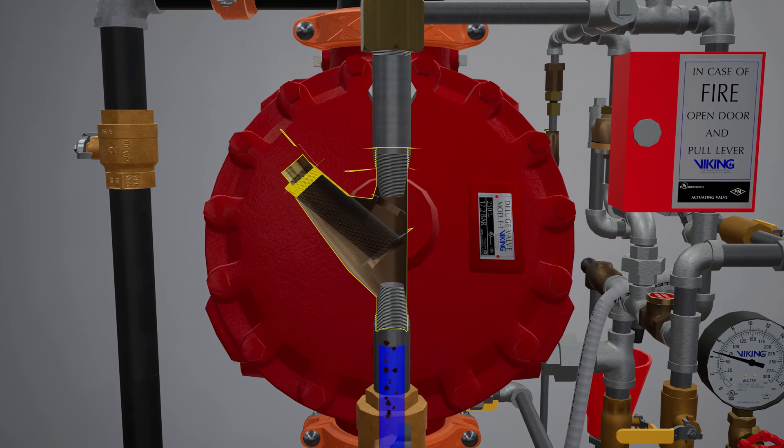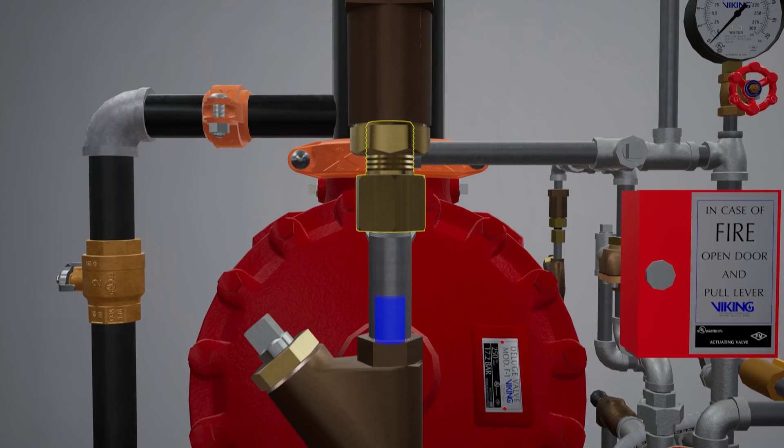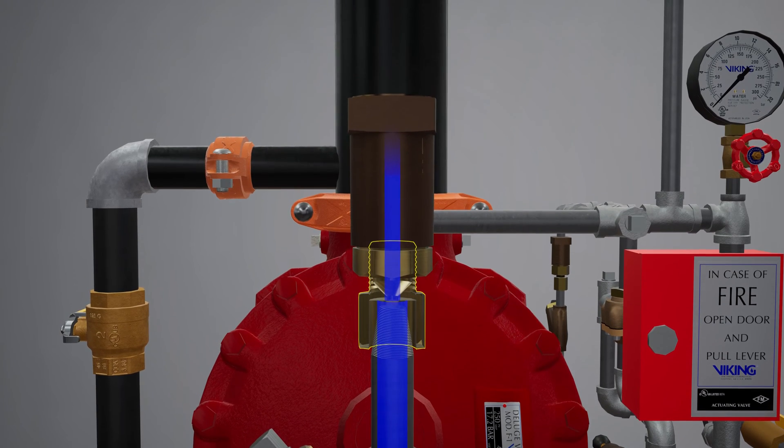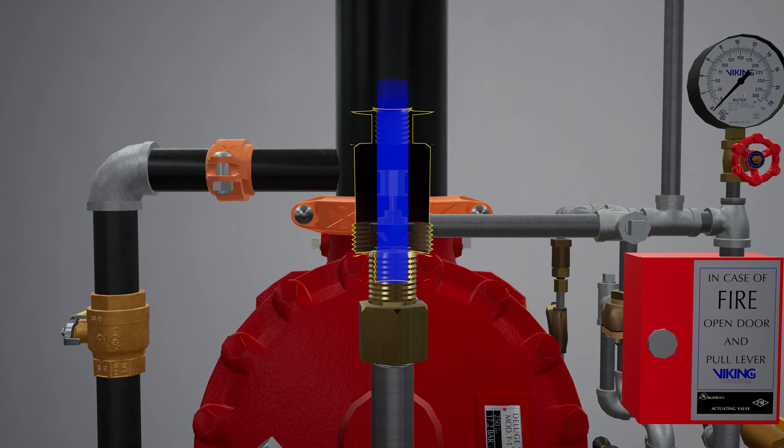The Y strainer keeps debris from entering the restricted orifice. The restricted orifice reduces the rate at which water can enter the prime chamber, ensuring that prime water will drain faster than it can be supplied. The check valve only permits water to enter the priming chamber, allowing prime chamber pressure to be maintained.